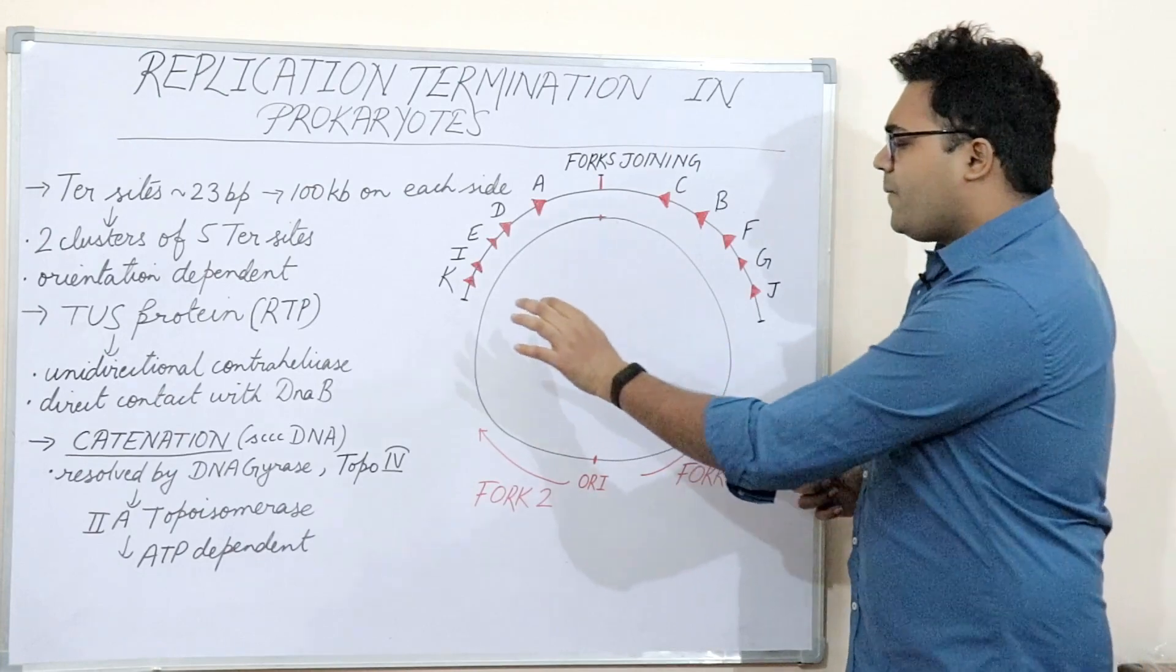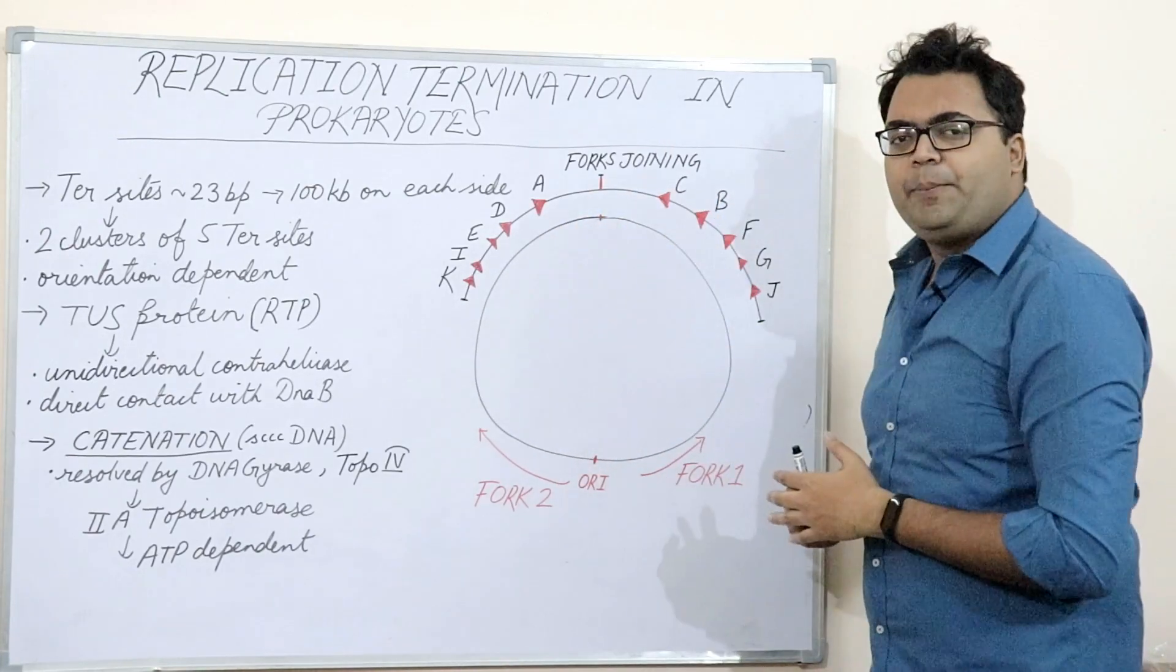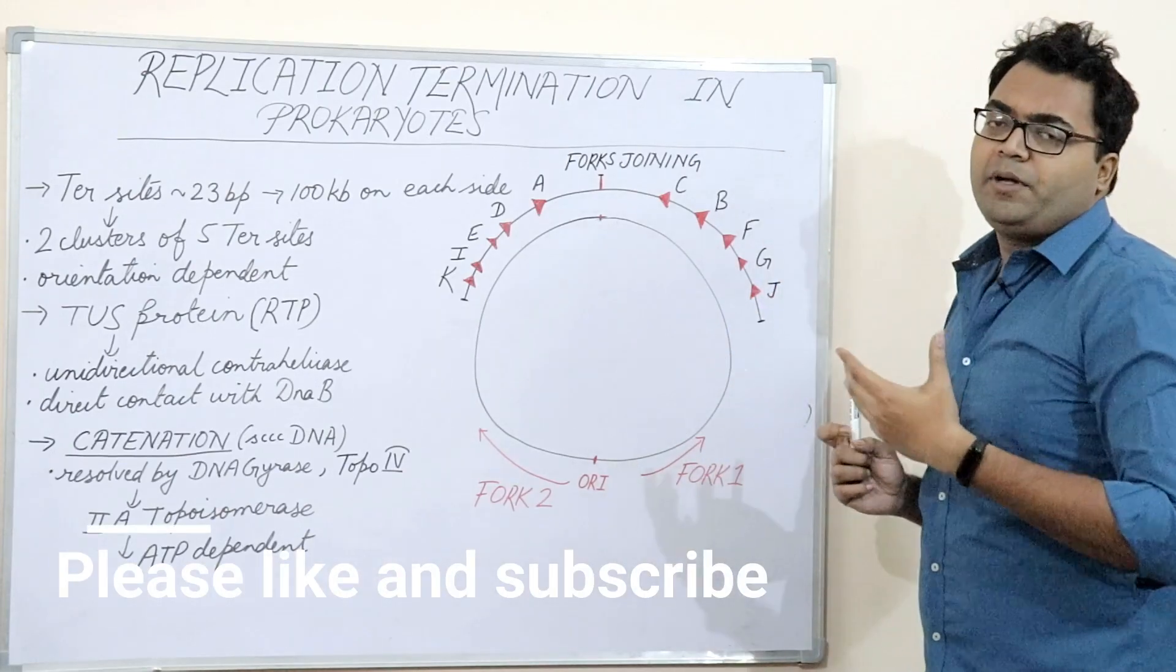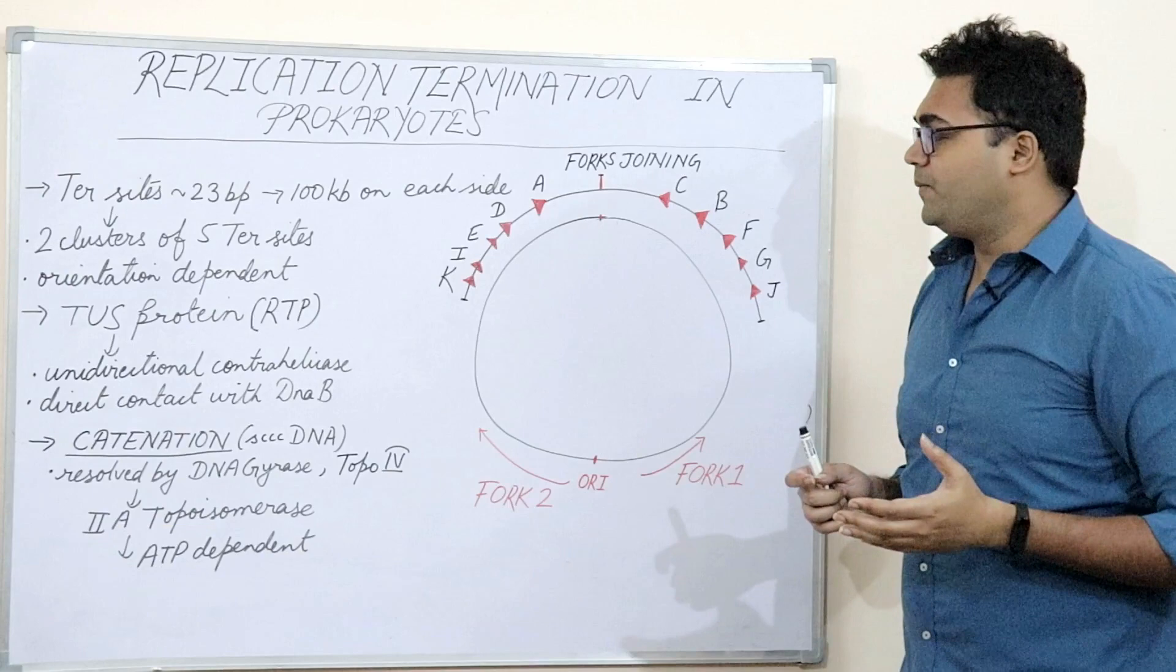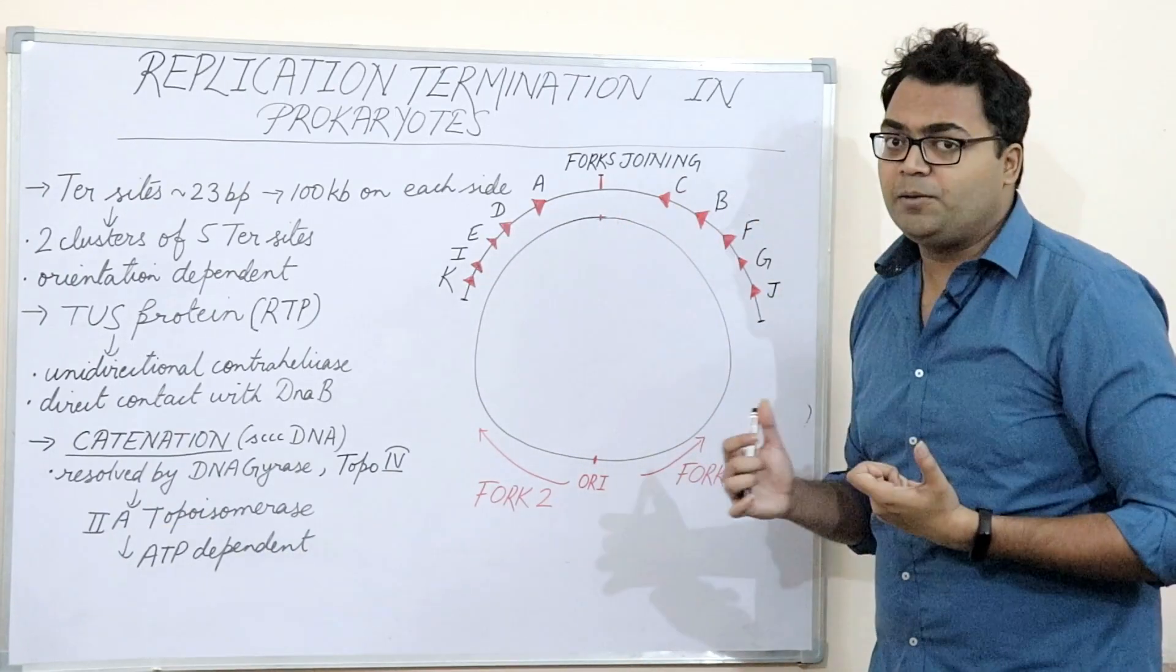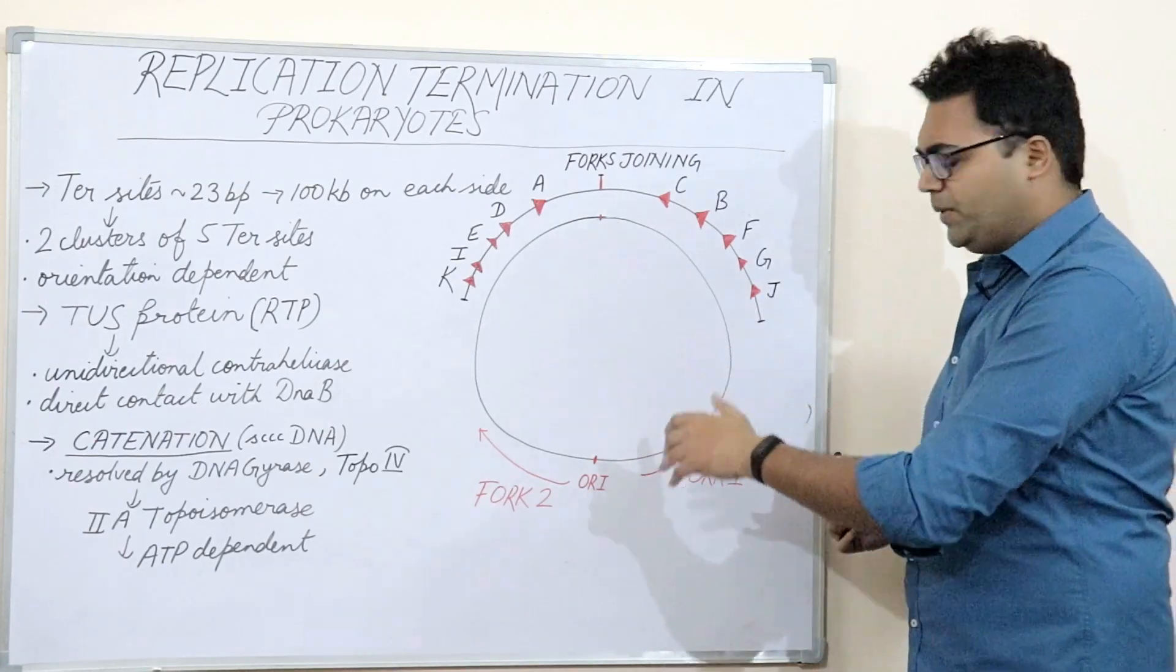Now what happens is, these ter sites are orientation dependent. They are extremely dependent on orientation or you can say they are quite vectorial in nature. They become permissible and non-permissible dependent on the direction of the replication fork they are encountering. So, let me get down to business.